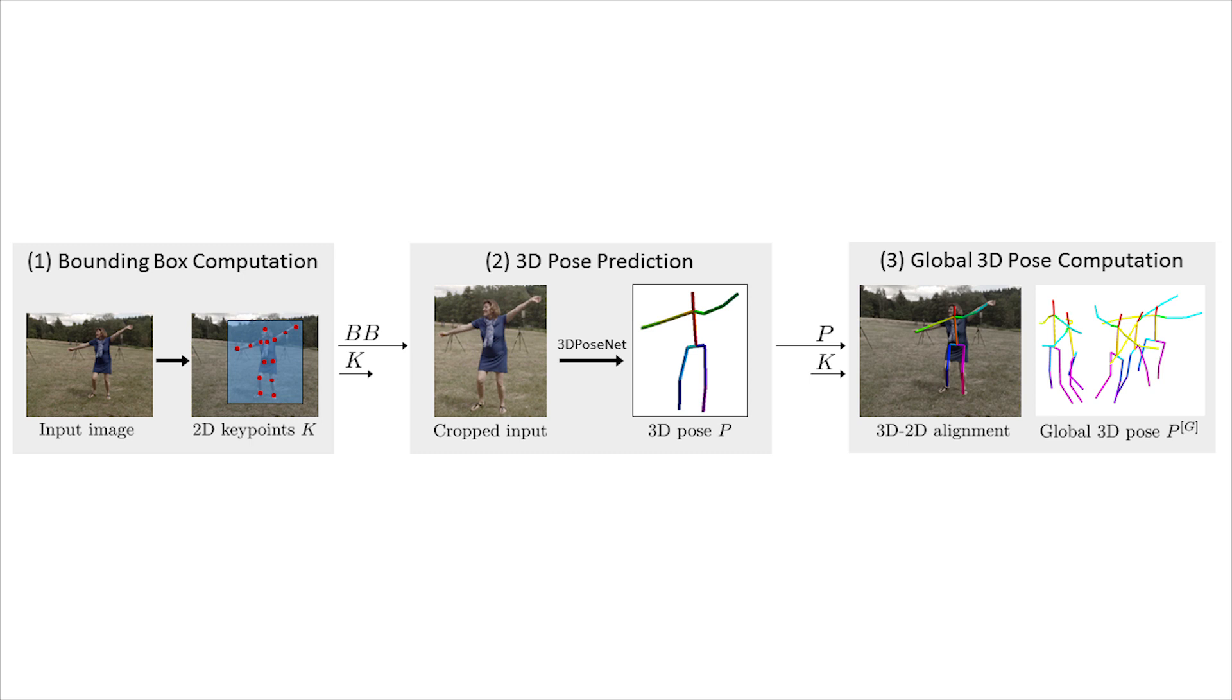These improvements fit into our overall pipeline, which consists of three steps. First, the subject is localized in the original frame from 2D detections. Then, the root-centered 3D skeleton pose is regressed using the approach discussed. And finally, we compute the global 3D position.